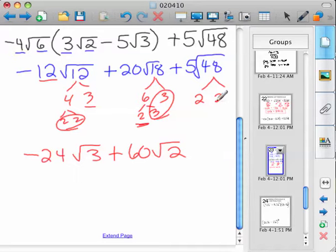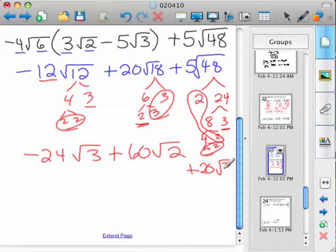48 breaks into 2 and 24, 24 breaks into 8 and 3, 8 breaks into 4 and 2, and 2 and 2, so I kind of ran out of room there, but we've got a pair of 2's here, a pair of 2's here, and a 3 left over in the prime factorization. So we've got 2 times 2 is 4, times 5 is 20, so you'd add plus 20 root 3.